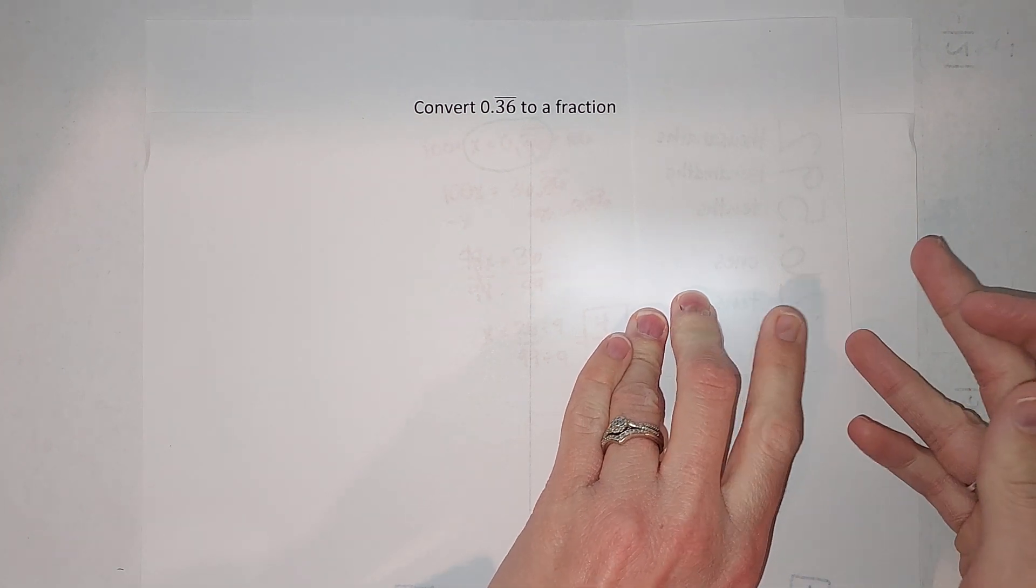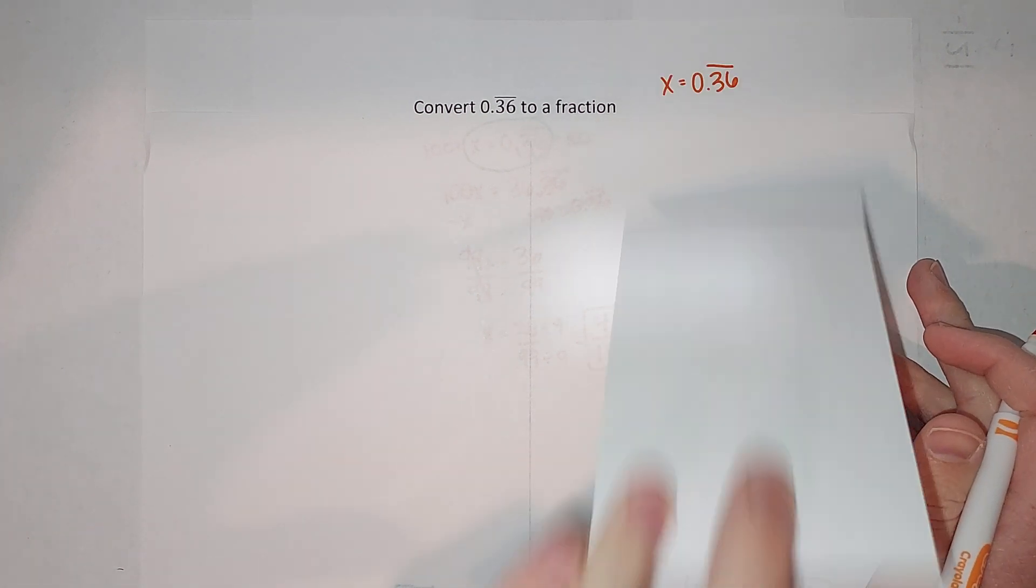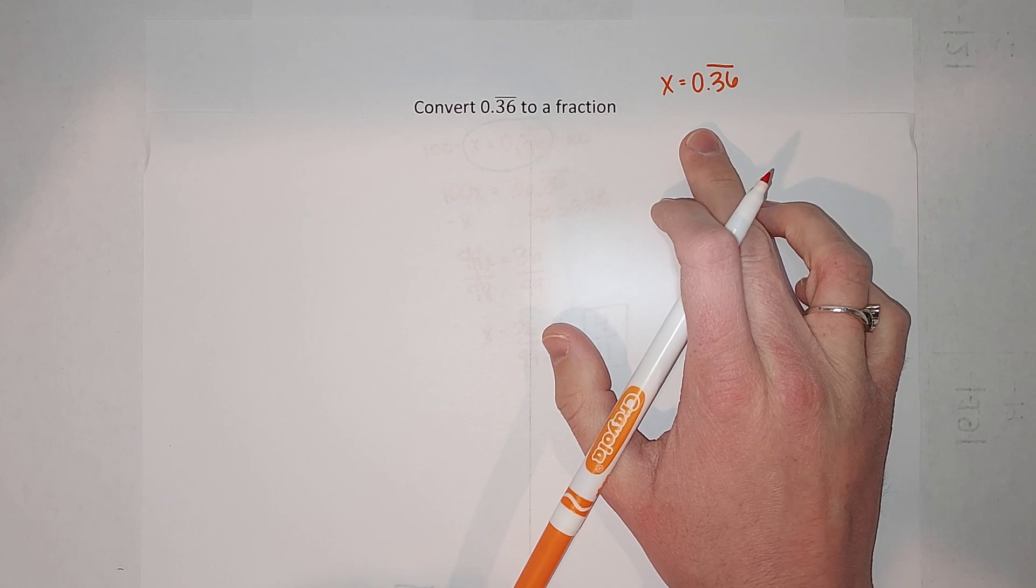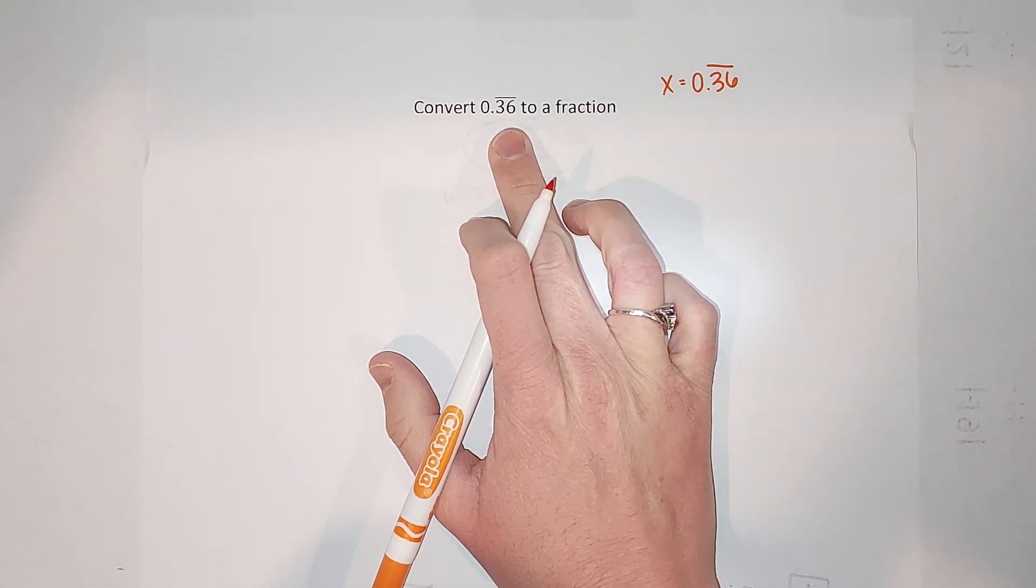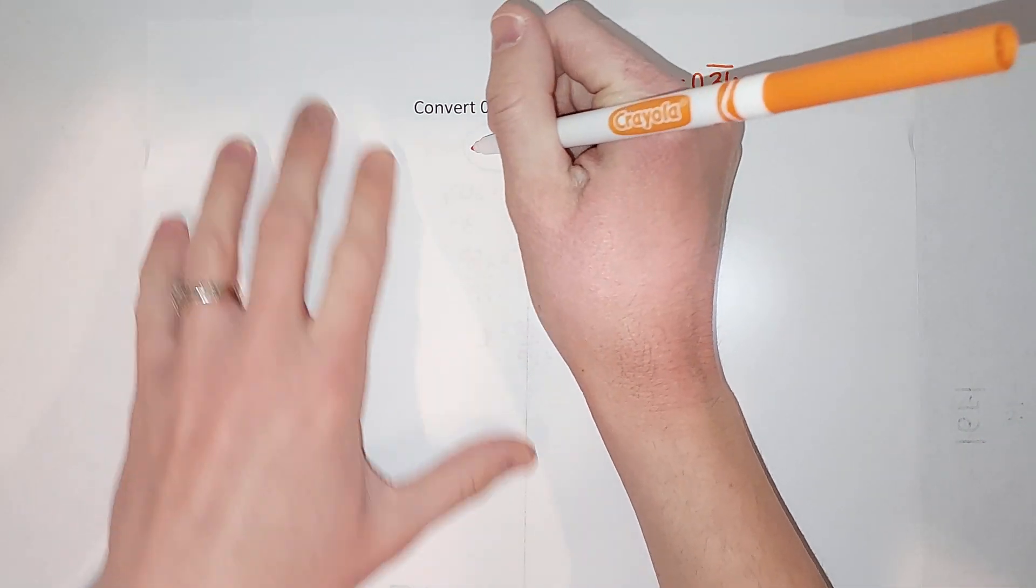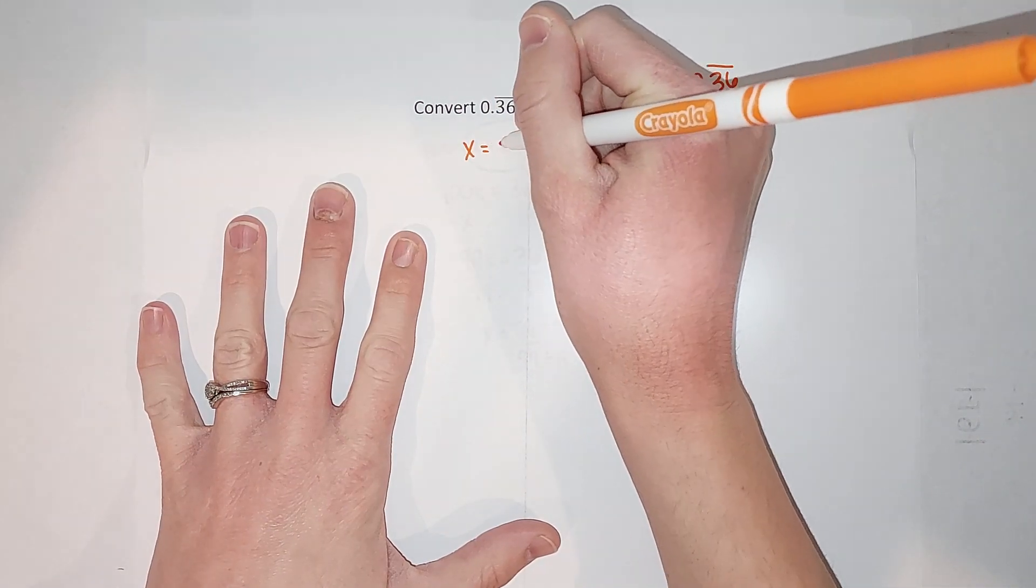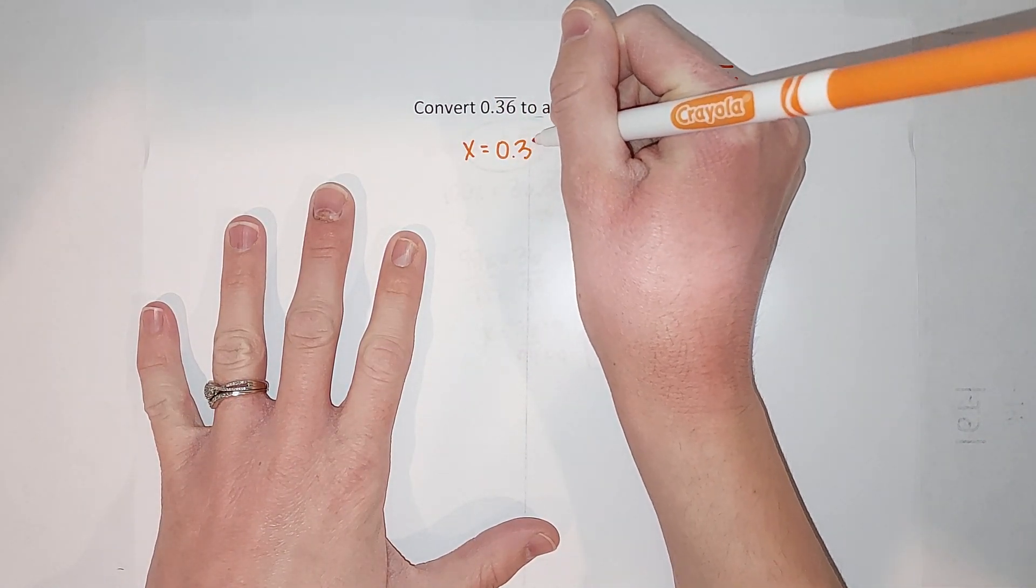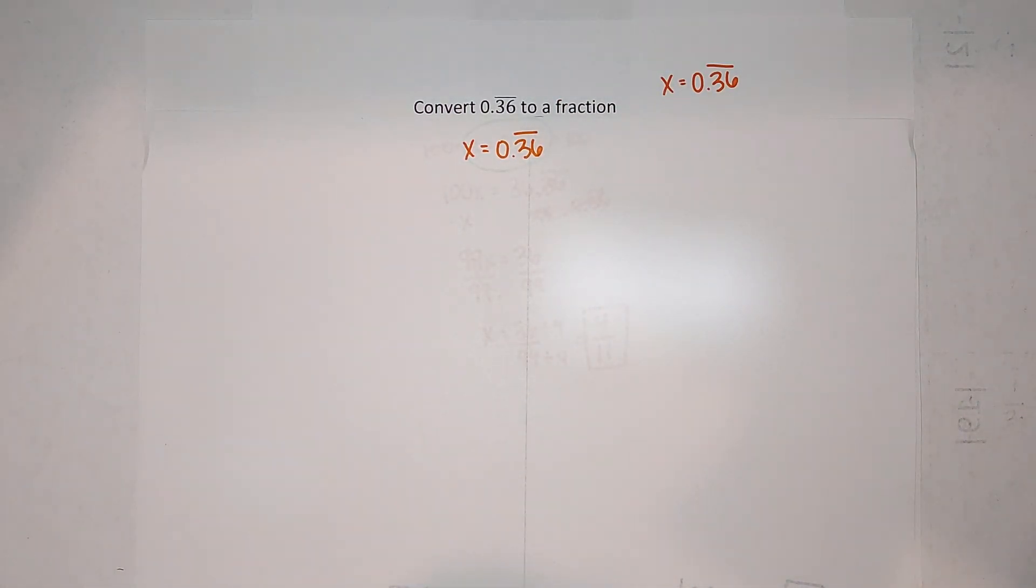The first thing we do in this strategy is we set x equal to our 0.36 here. So x equals 0.36 repeating. I'm gonna write that again down here: x equals 0.36 repeating.